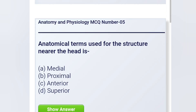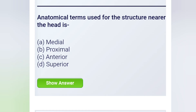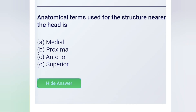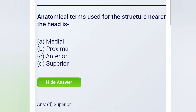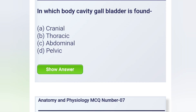Next question: The anatomical term used for a structure nearer to the head is — the correct answer is Superior. Next question: In which body cavity is the gallbladder found? The correct answer is the Abdominal cavity.